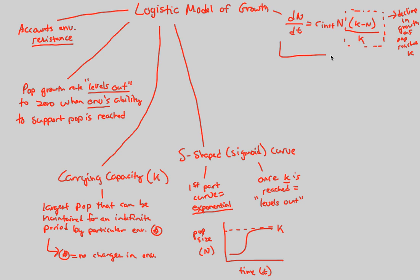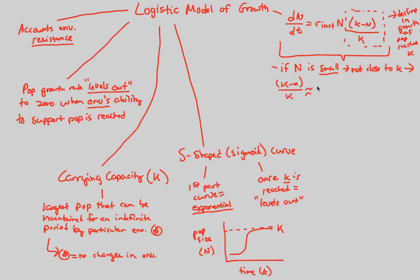The big ideas to understand: if N is small, the population is not close to K. In that case, (K minus N) over K is approximately equal to 1. This only occurs when N is small and N is not close to K — both conditions must be true to get this result.